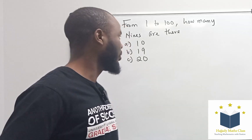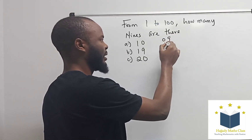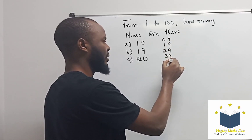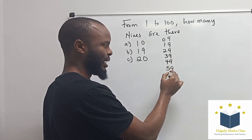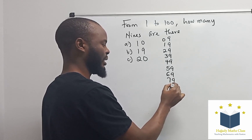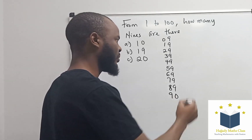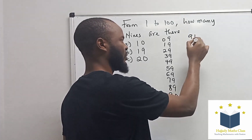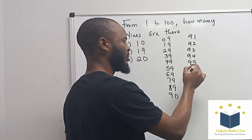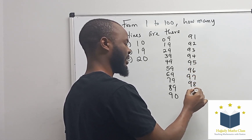Okay, now let's go. So here, let's start with: we have 9, 19, 29, 39, 49, 59, 69, 79, 89, and 90. Let's continue. We have 91, 92, 93, 94, 95, 96, 97, 98, and 99.